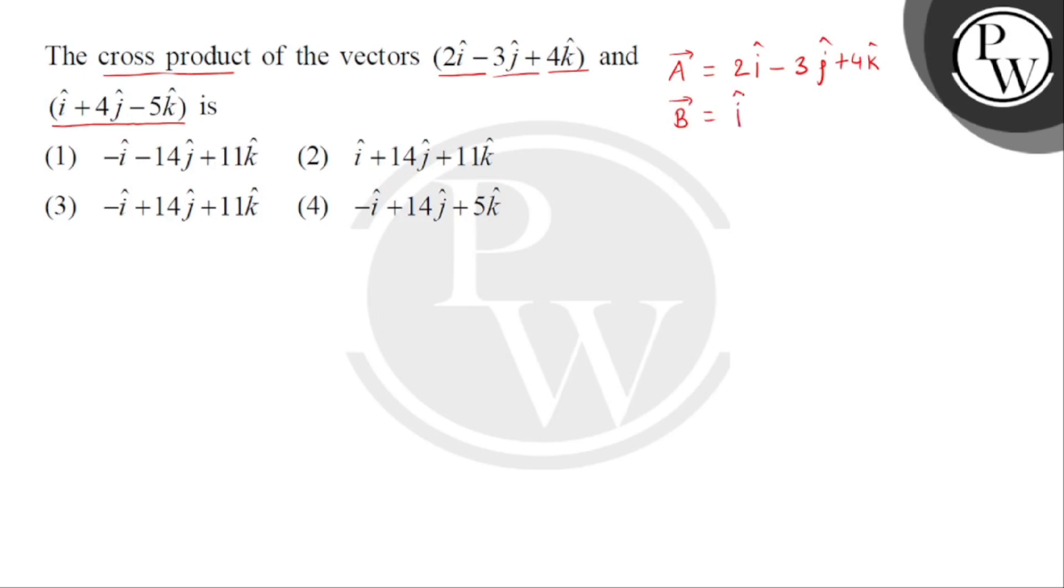b vector is given which is i cap plus 4j cap minus 5k cap. यहां पहले हमें यह जानना ज़रूरी है कि i cap, j cap and k cap are the unit vectors along the positive directions of x-axis, y-axis and z-axis respectively.